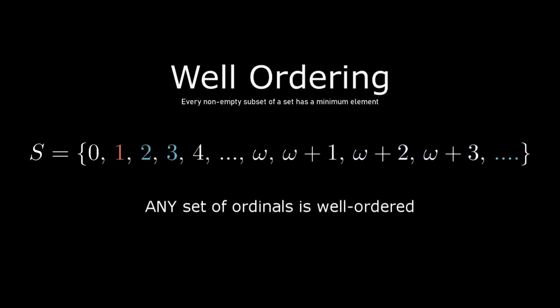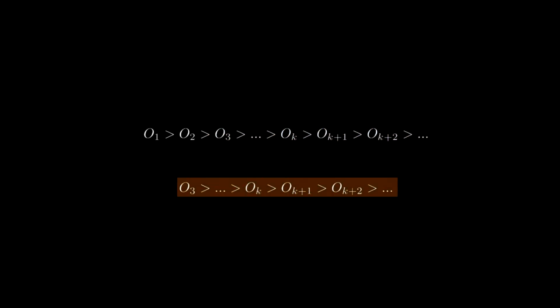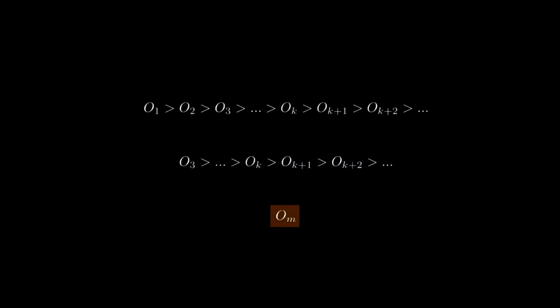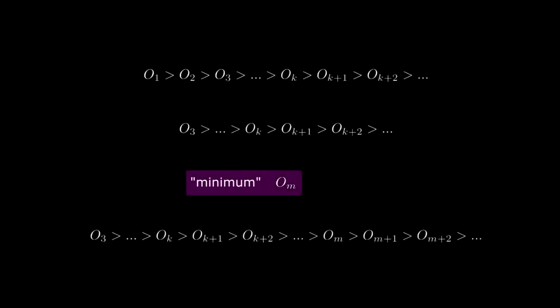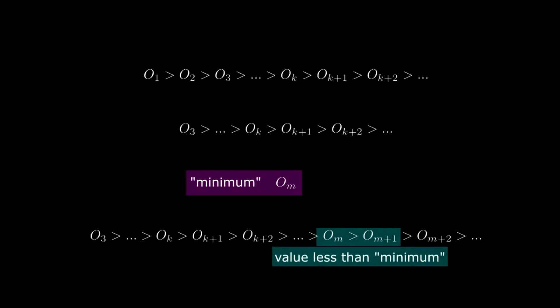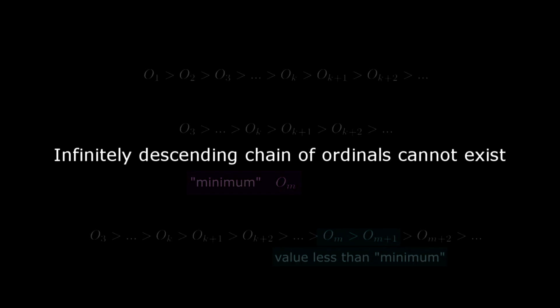It follows that an infinitely descending chain of ordinals cannot exist. Say we have an infinitely descending chain of ordinals and take a subset of it. Since all sets of ordinals are well-ordered, there must be a minimum element, say OM. But this subset is infinitely decreasing, meaning it continues past OM — contradicting OM being the minimum. This shows by contradiction that an infinitely descending chain of ordinals cannot exist.